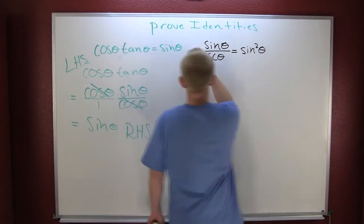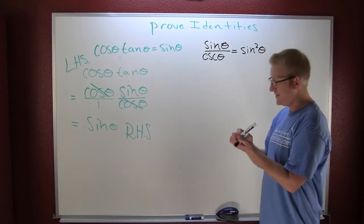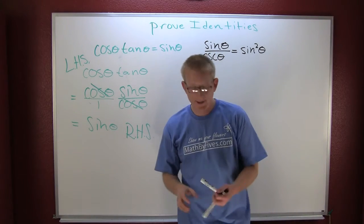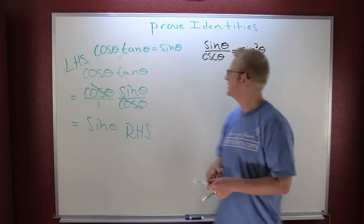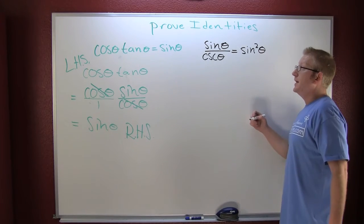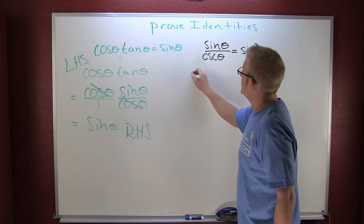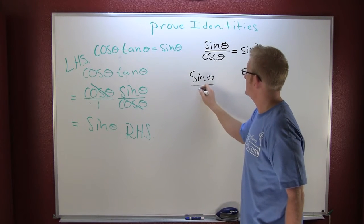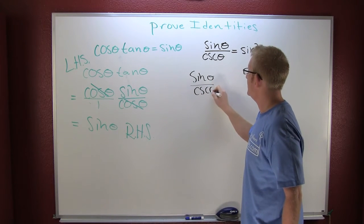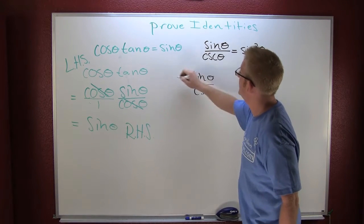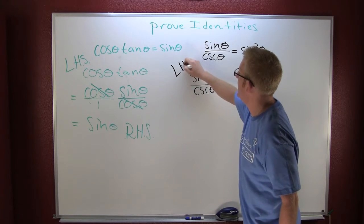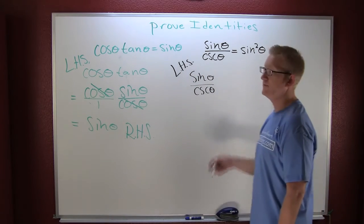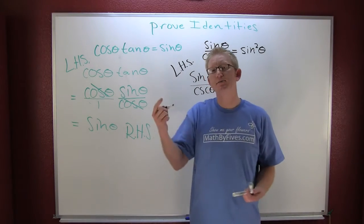Let's take a look at this guy in my black identity. Once again, I want to start with the harder side, or at least the one that has the appearance of being rough around the edges. It looks like my left side. My left side is the sine of theta over the cosecant theta. I'm going to write the left-hand side.